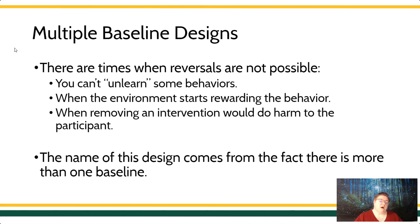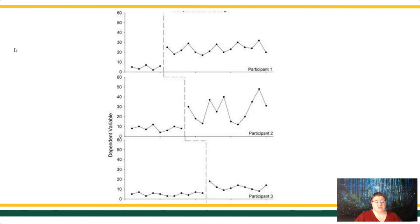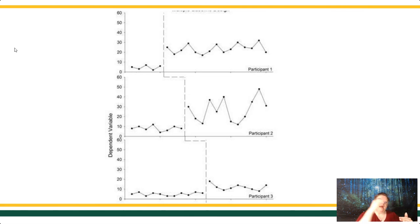A multiple baseline design is for when we have irreversible behaviors, when the environment may be maintaining that behavior, or when removing the intervention would do harm to the participant. The reason we call this a multiple baseline design is because we have more than one baseline — we're tracking multiple participants, multiple behaviors, or even multiple settings. On screen is a demonstration of three different participants, where on the y-axis we're tracking the dependent variable across time.